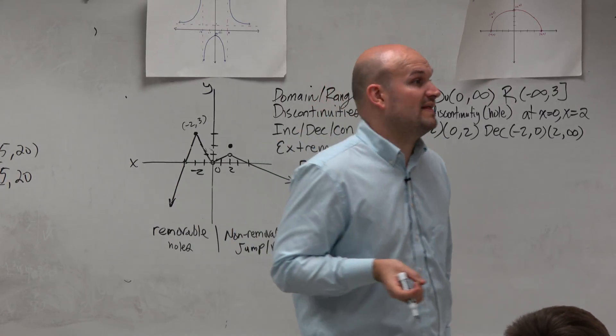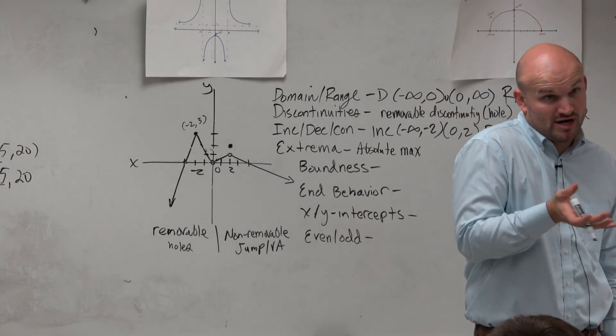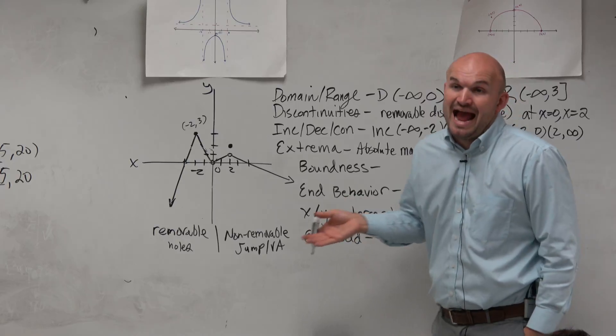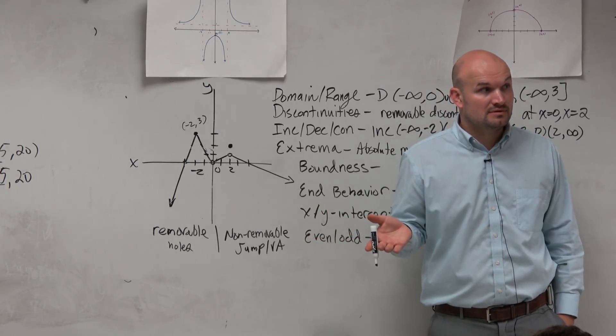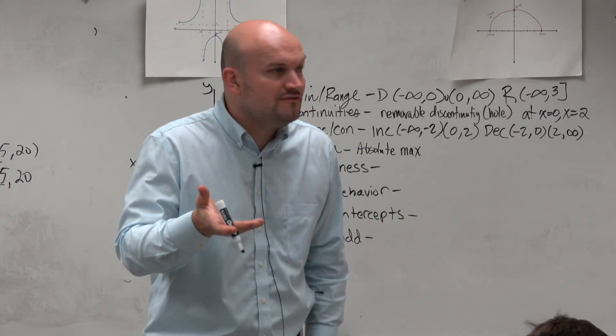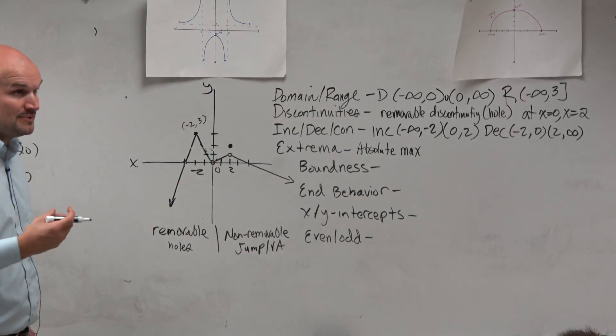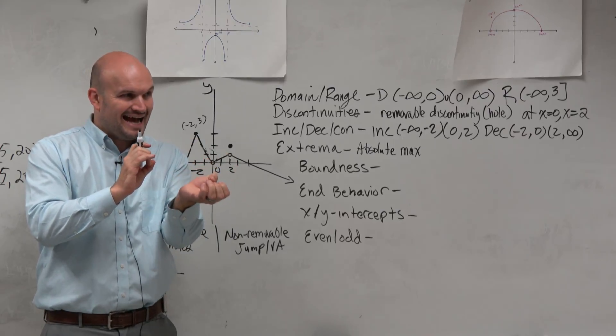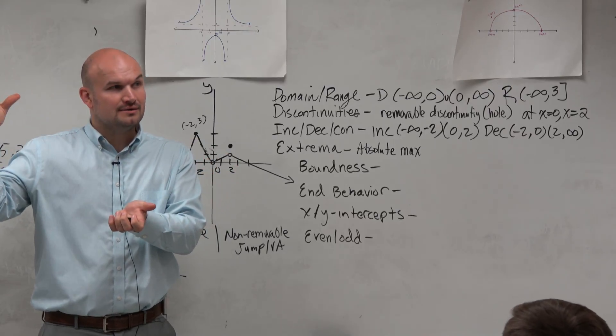Now, could we talk about where that absolute maximum occurs, like where the location is, like the x value of it? Could we say there's a maximum value at x equals negative 2? And could we also say there's a maximum value of y equals 3? So we can talk about this maximum value in terms of its location, x, or its value y, correct?